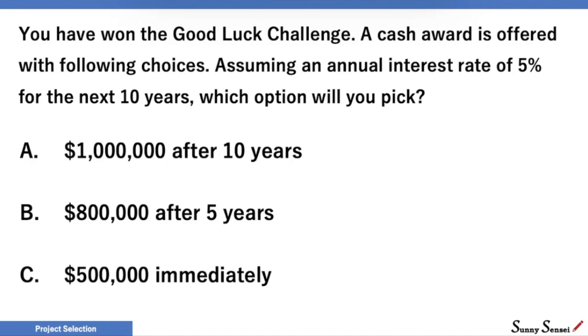Here is a simple problem to test our understanding. You have won the Good Luck Challenge. A cash award is offered with following choices. Assuming an annual interest rate of 5% for the next 10 years, which option will you pick? You have three choices: A, $1 million after 10 years; B, $800k after 5 years; C, $500k immediately. I strongly suggest that you pause this video and try this question. Use the calculator.